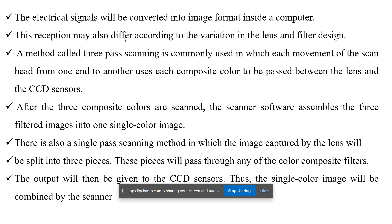The electrical signals are converted into image format inside a computer. This reception may differ according to variations in lens and filter design, as different scanner brands have different qualities. A method called three-pass scanning is commonly used, in which each pass of the scan head from one end to another uses each composite color to be passed between the lens and the CCD sensors.